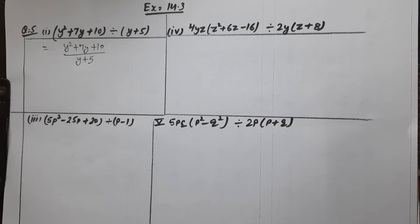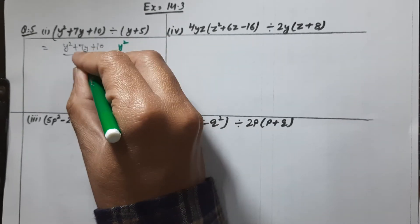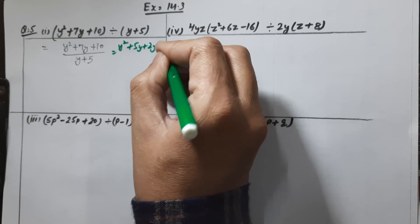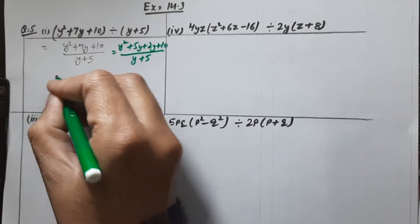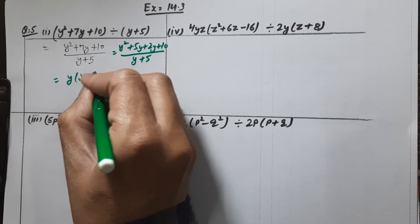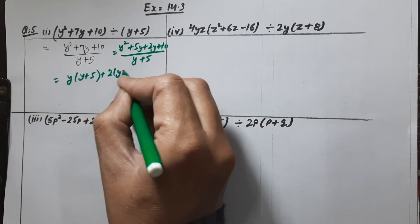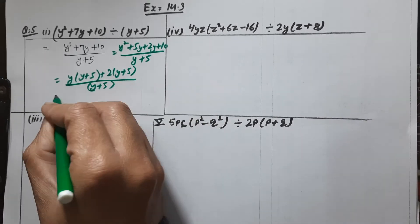We will factorize the numerator by splitting the middle term: y squared plus 5y plus 2y plus 10, as we discussed in the previous question, over y plus 5. Now take y common: y into (y plus 5) plus 2 into (y plus 5), over y plus 5.